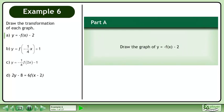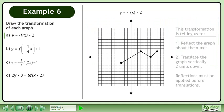Draw the transformation of each graph. In part a, we'll draw the graph of y equals negative f of x minus 2. This transformation is telling us to: 1. Reflect the graph about the x-axis, and 2. Translate the graph vertically two units down.